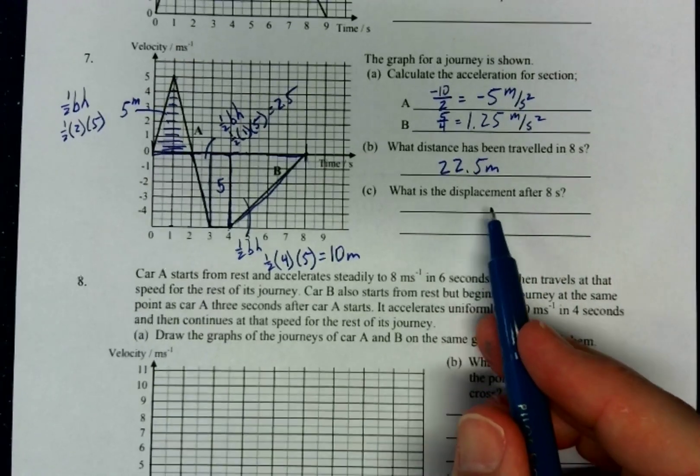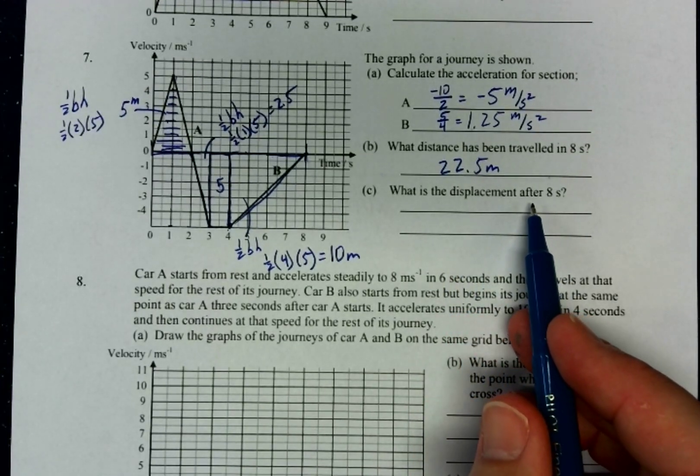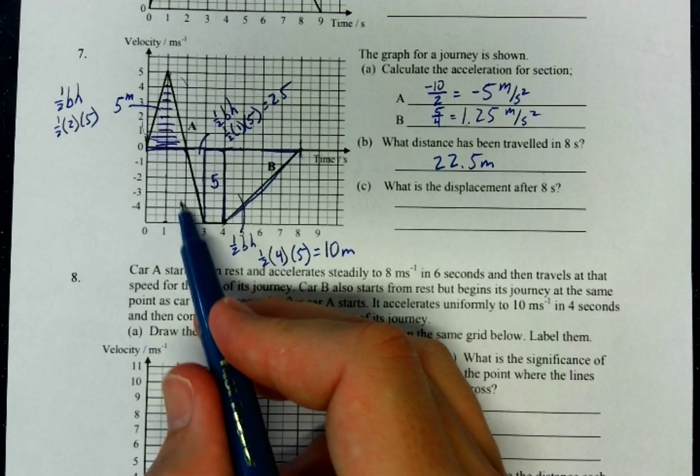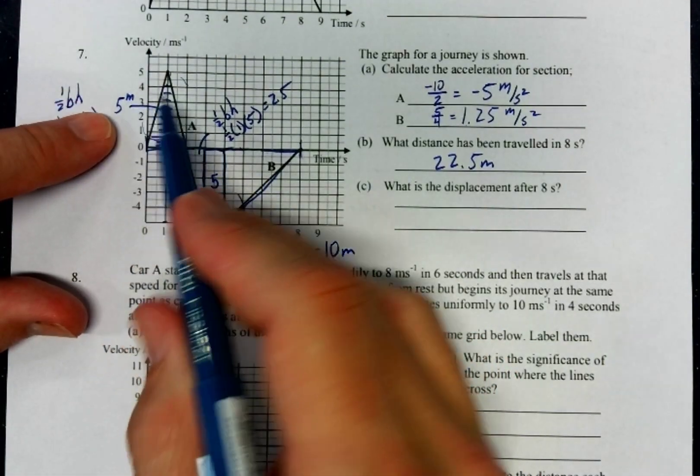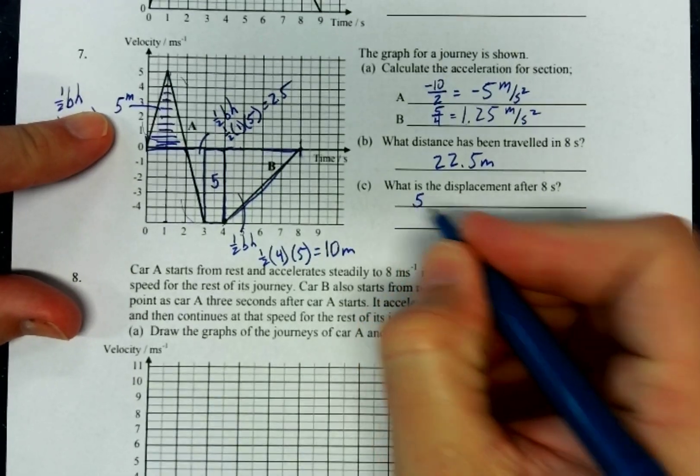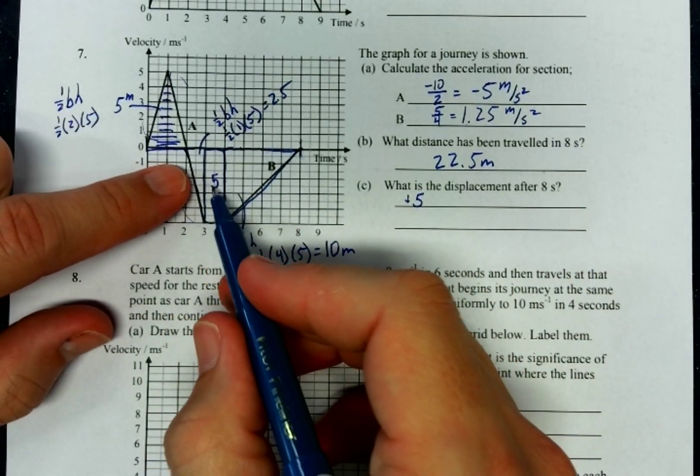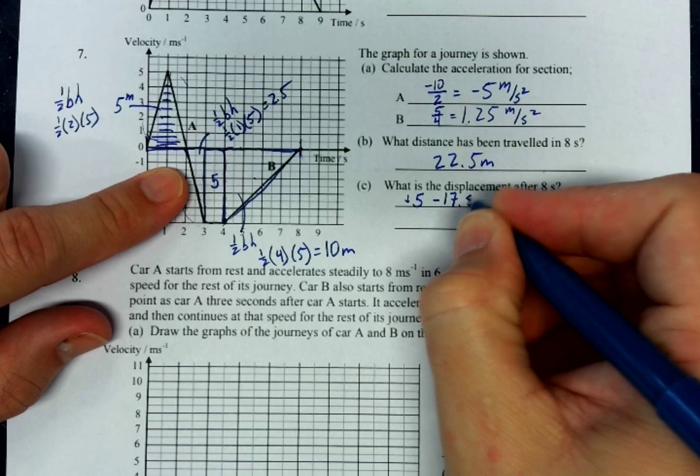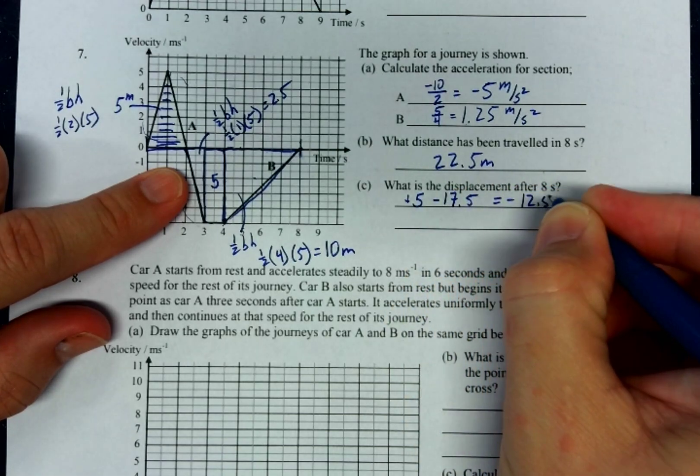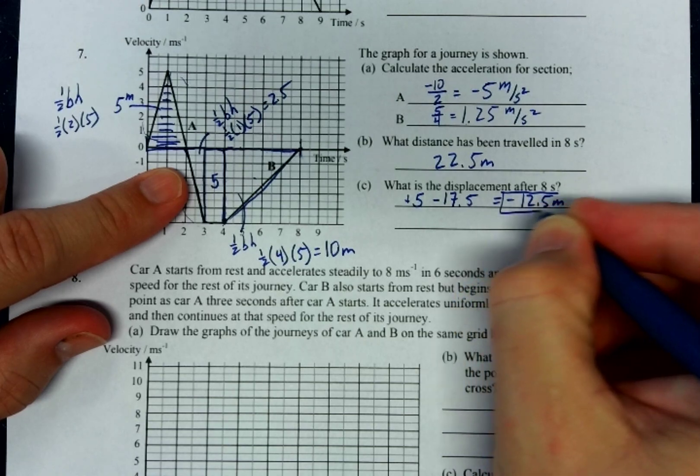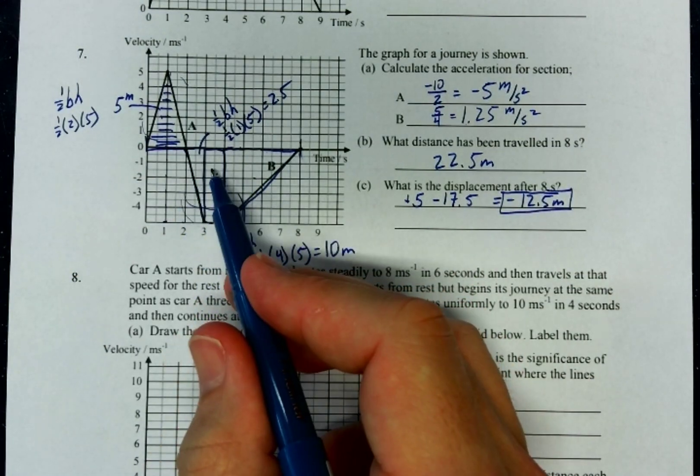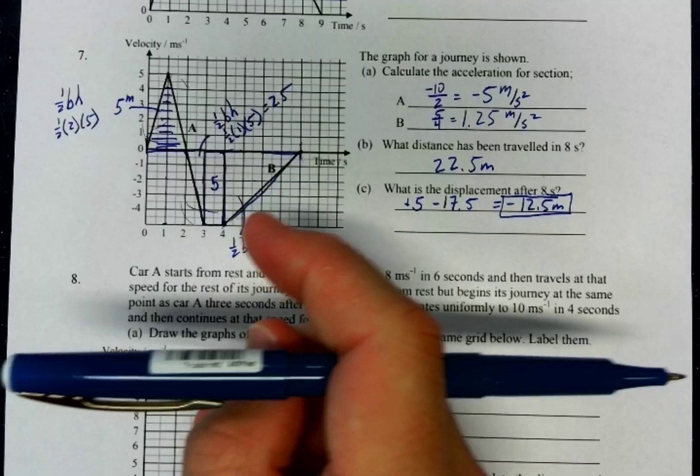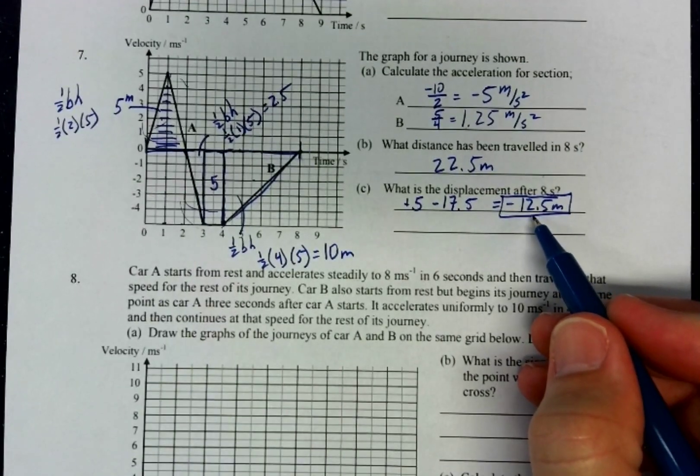Now when it asks for displacement, we're going to treat anything above the x-axis as positive and anything beneath the x-axis as negative. So what you'll notice is that I have a positive five, which is above the x-axis, and then I have a negative five plus 10 is 15, plus 2.5 would be 17.5. And so when I put those two together, I end up getting negative 12.5. Now in a sense, that should make sense because I have a negative velocity for much longer than I have a positive velocity. So if I'm traveling to the left a lot more than I'm traveling to the right, then it should make sense that my displacement is to the left.